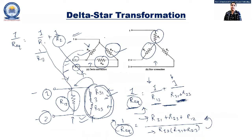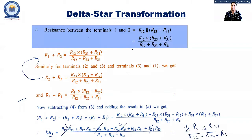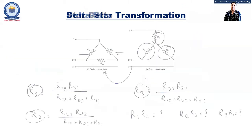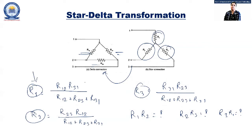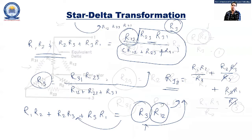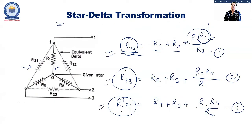In the last session, two different figures were discussed — one regarding the delta connection and the second regarding the star connection. The main purpose was simplifying the network for analysis. For a triangle shape, you can convert it using three different equations. We saw how those equations were derived by considering series and parallel connections between two terminals, then adding and subtracting to get the final equations for delta-to-star transformation.